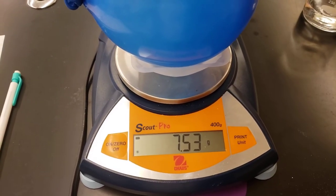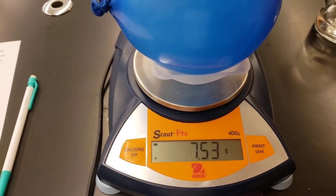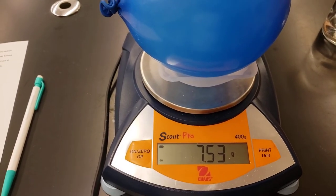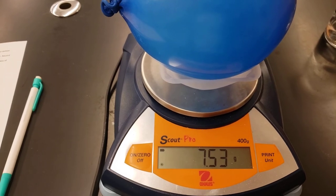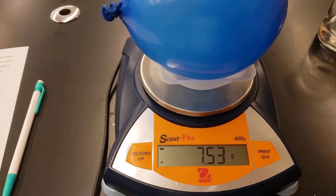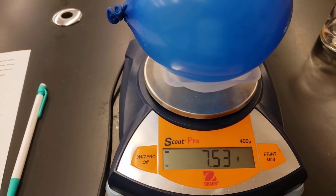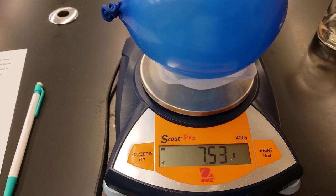Now the last step is to subtract the mass that we just got from the mass of the weigh boat and balloon in order to figure out the mass of our carbon dioxide. Once you have the mass of your carbon dioxide calculated you are ready to answer your post lab questions and move forward.